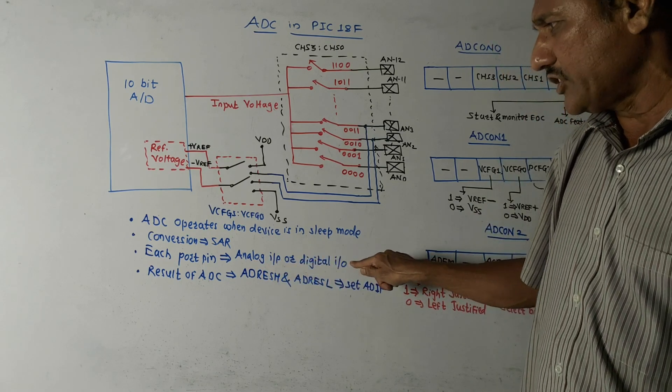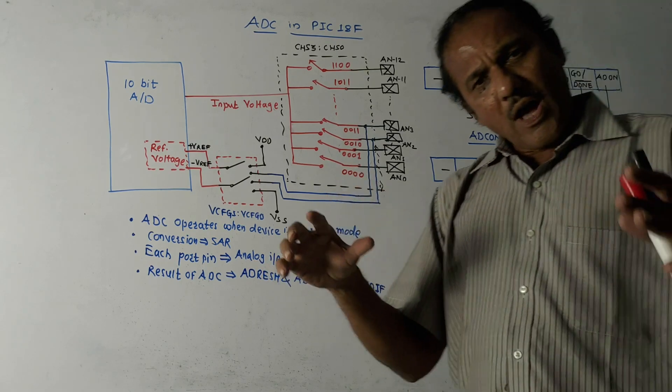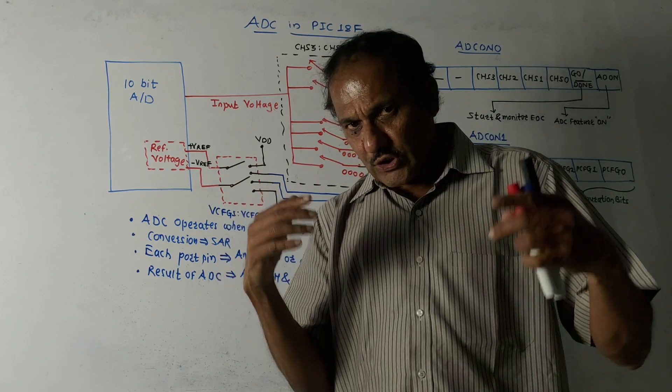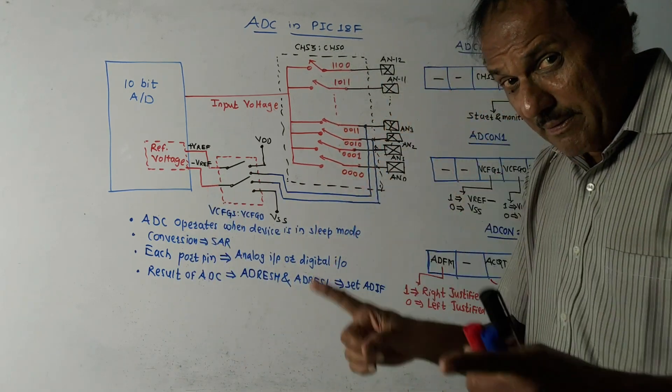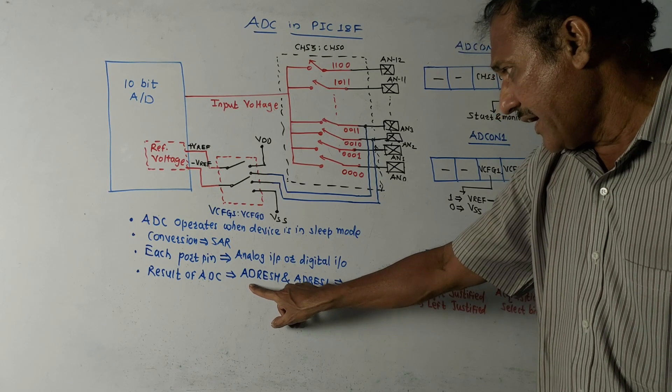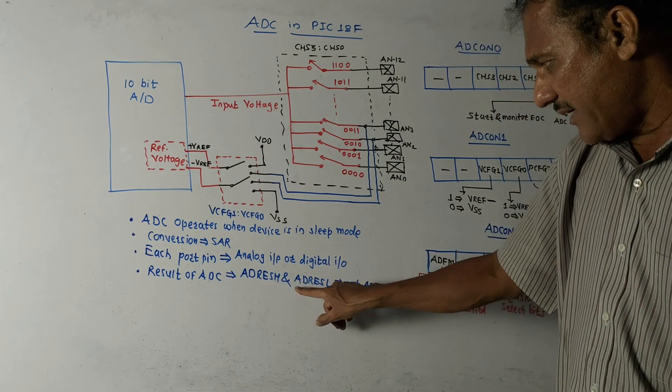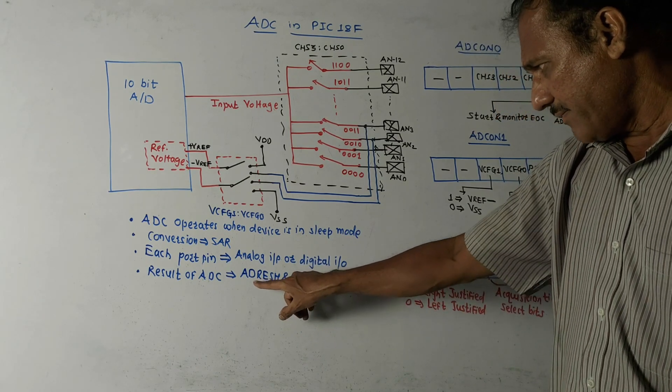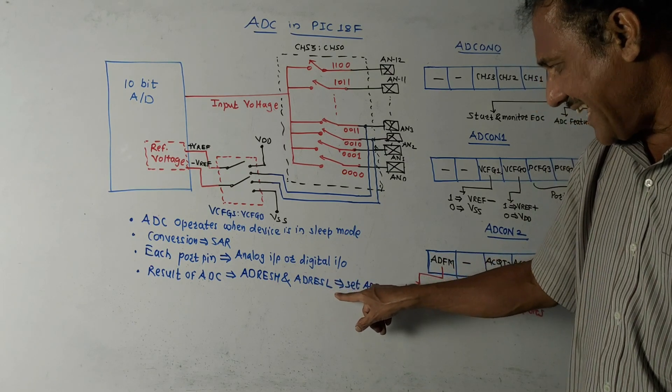Now after completion of analog to digital conversion, the result, the 10-bit result, is stored in ADRESH, that is higher AD register, and ADRESL.